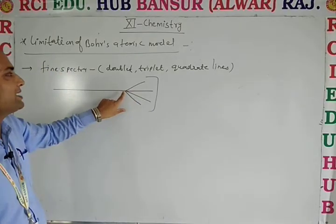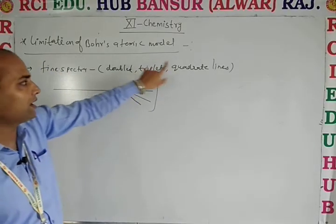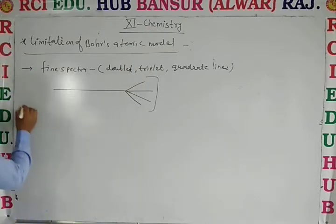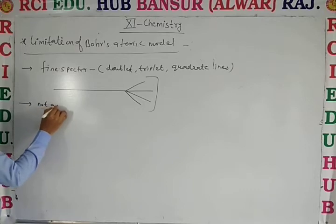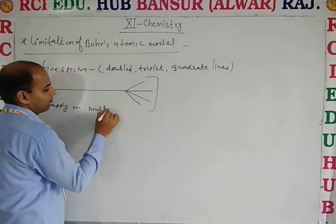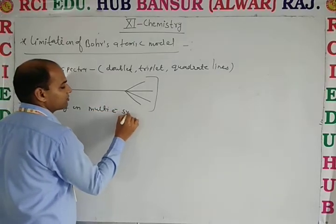That is, two lines doublet, three lines triplet and four lines quadruplet lines. Clear, second point is, not apply on multi-electron system.